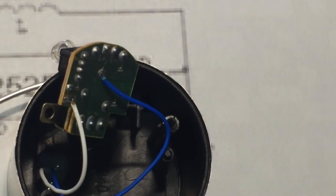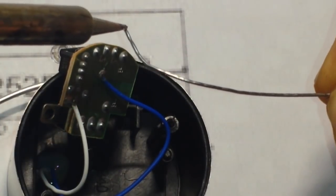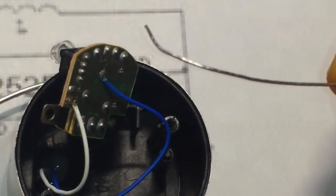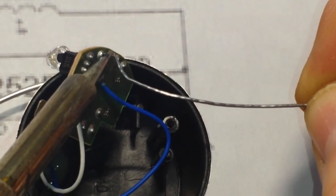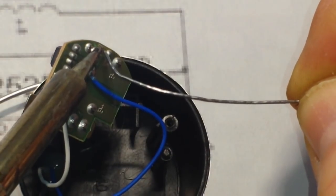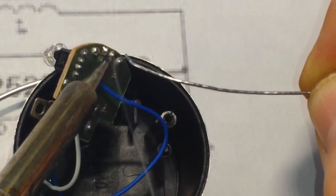Alright, the first thing we're going to do to desolder that might seem a little counterintuitive. But we're going to add a little bit of leaded solder to it. Because this unleaded solder stuff is just pure crap.